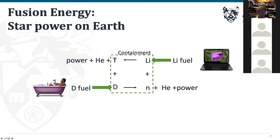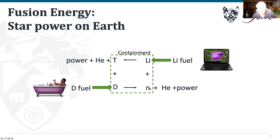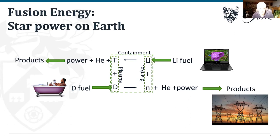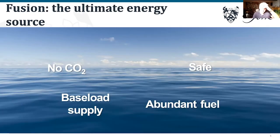We have to contain the fuel — deuterium, tritium, and lithium — at very high temperatures, where they exist in plasma form. The hot plasma is contained in the core of the reactor, with lithium compounds in blankets surrounding the plasma to capture the outgoing neutrons. The main product is electricity, generated via the standard process of heat boiling water, steam turbines driving generators.